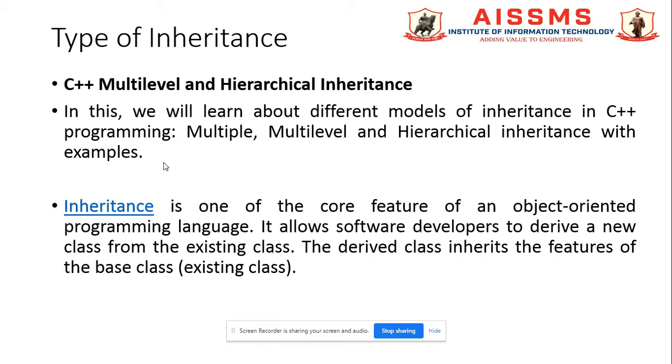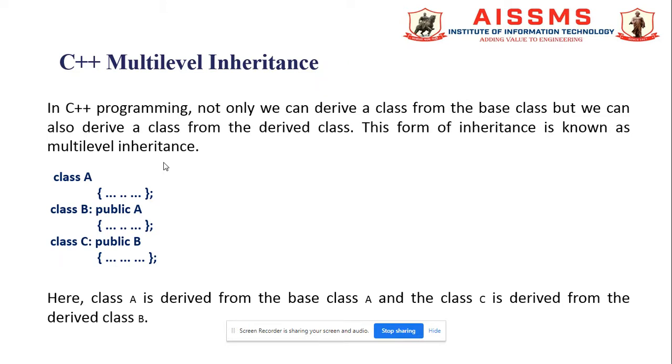In multilevel inheritance, when single level inheritance is extended to more levels, it is called multilevel inheritance. In this type of inheritance, one class is derived from another derived class and the level of derivation can be extended to any number of levels.